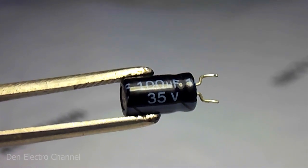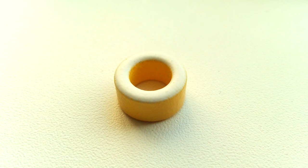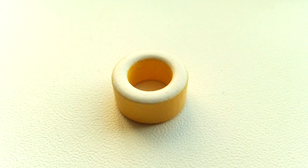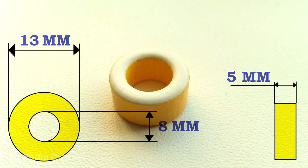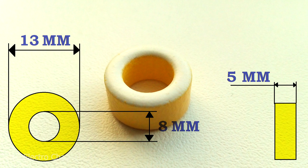At the input, I put 100 microfarads at 35 volts. For the throttle, I use this yellow ring with a white sidewall. Outer diameter 13 millimeters, inner 8, and thickness 5 millimeters.